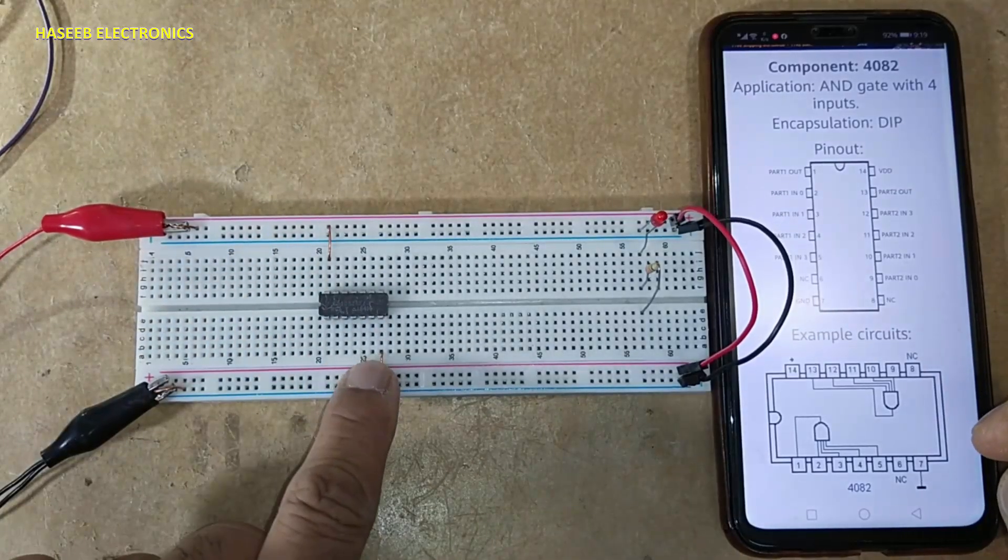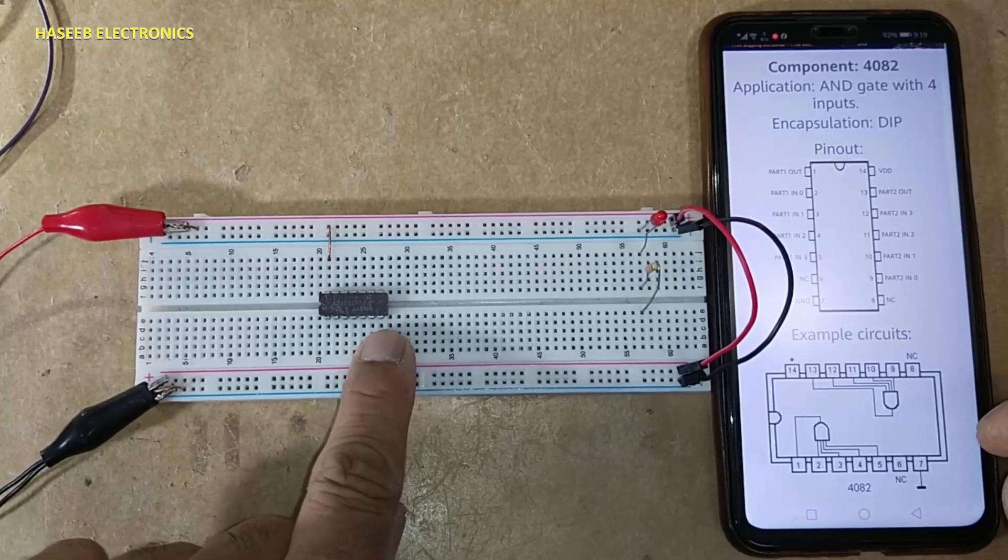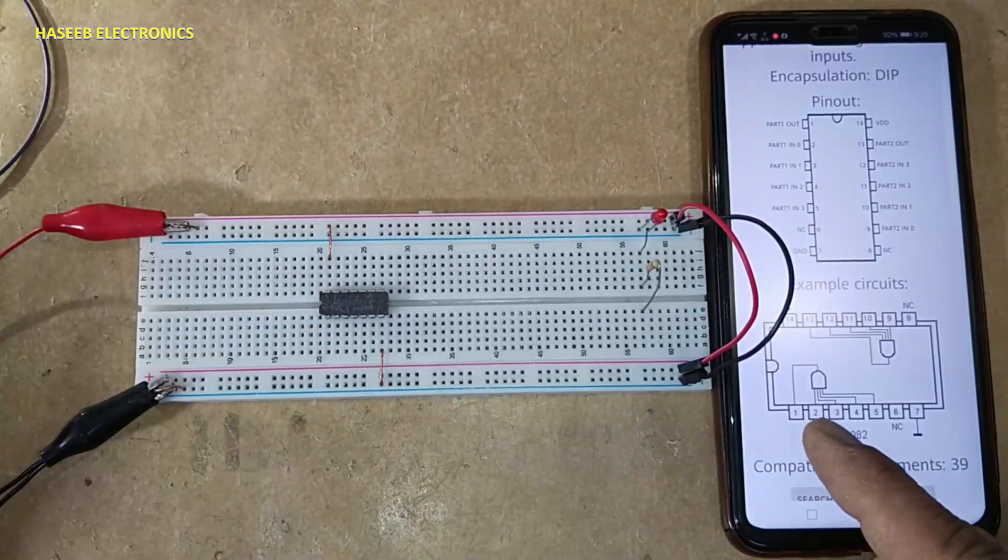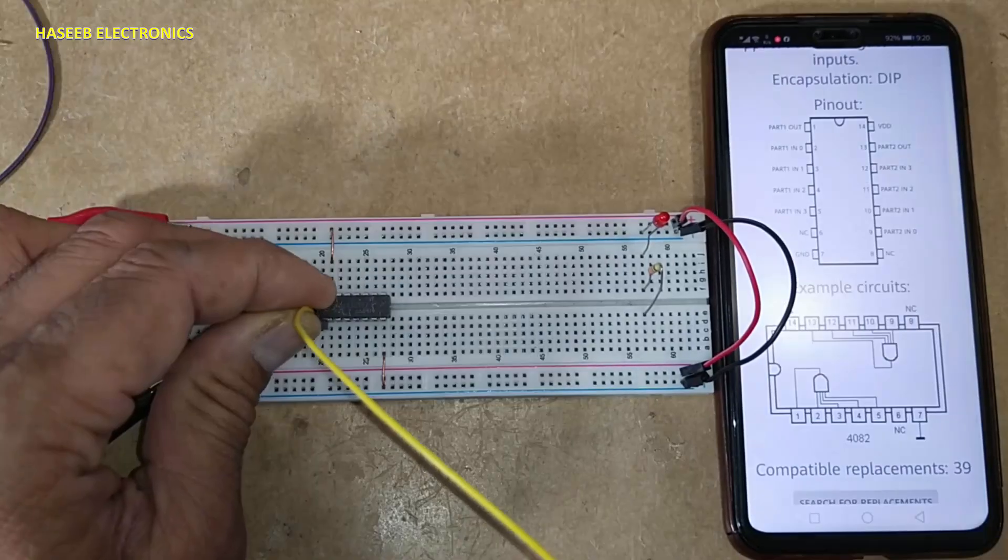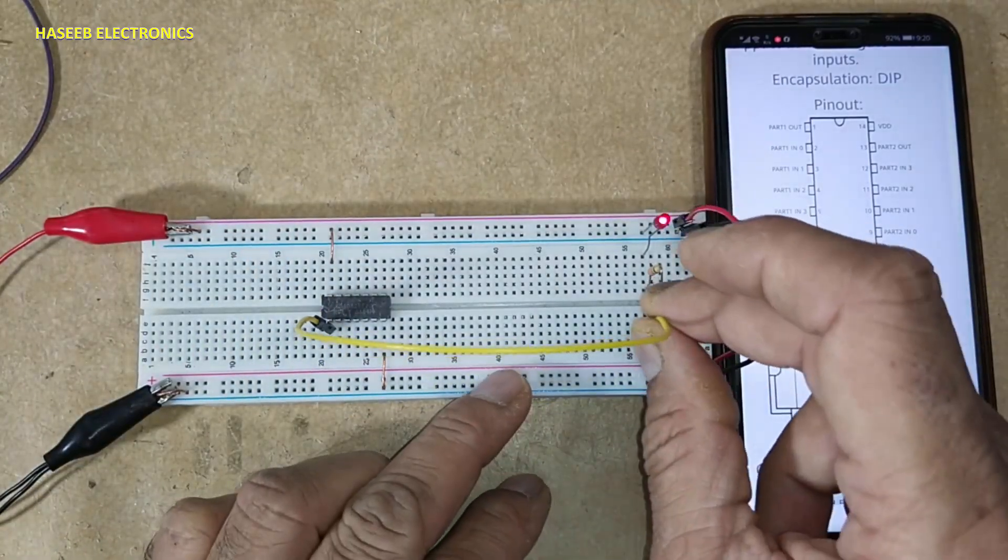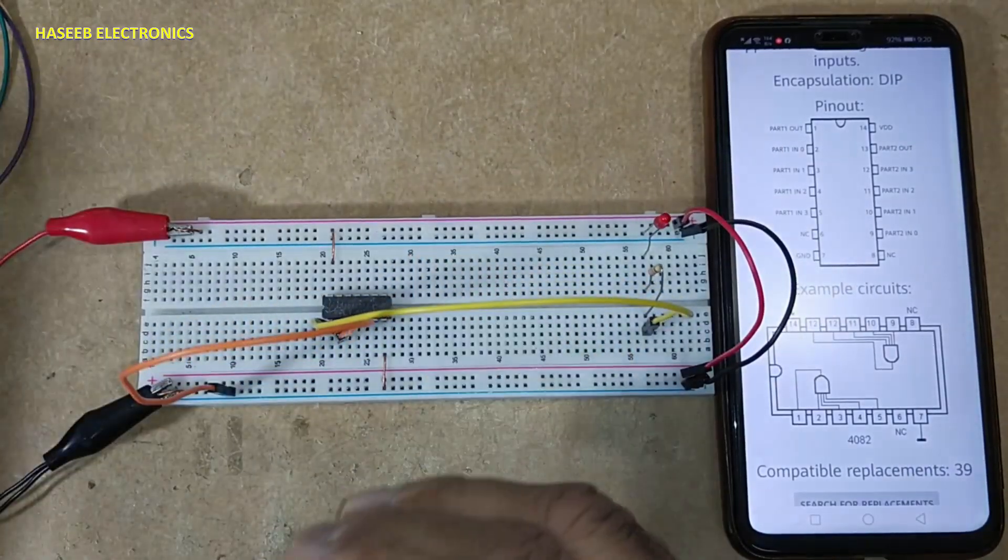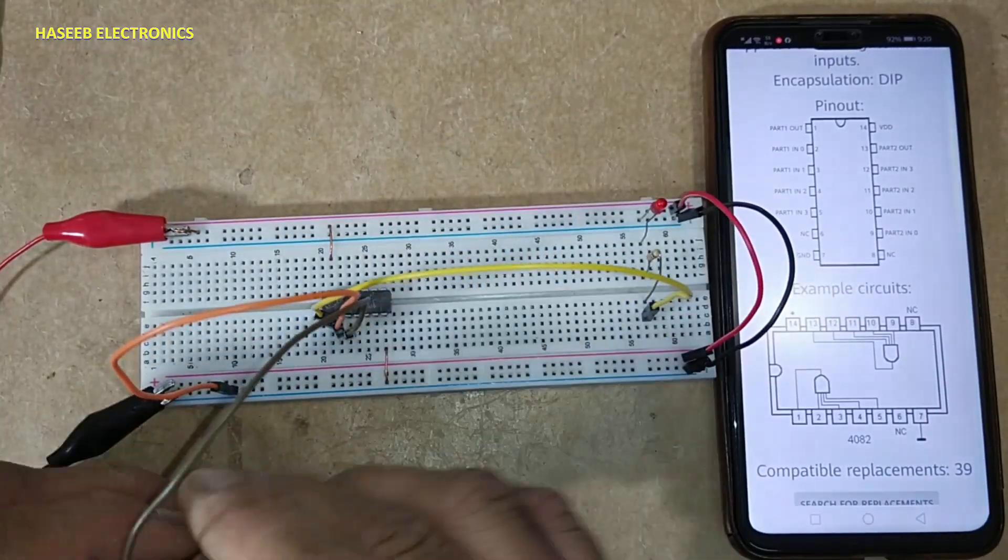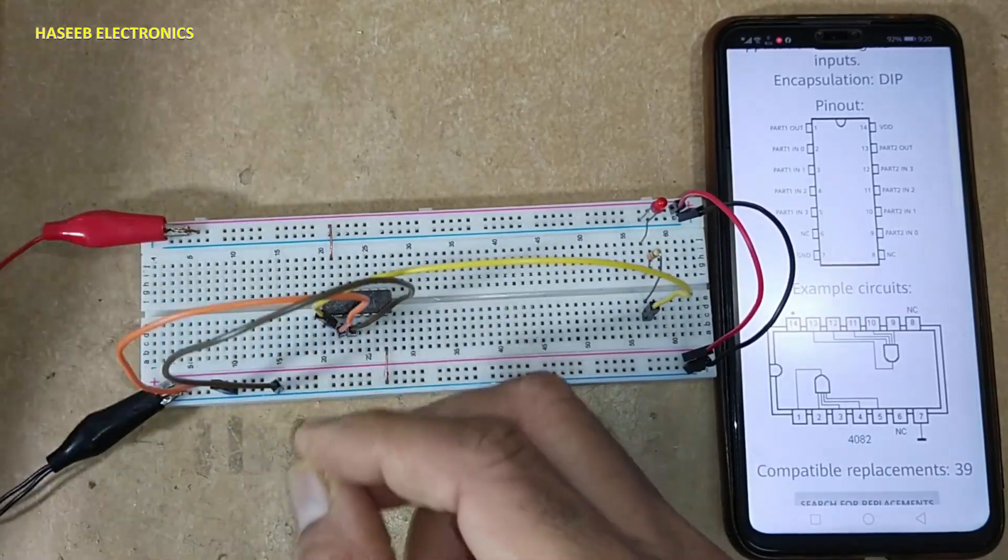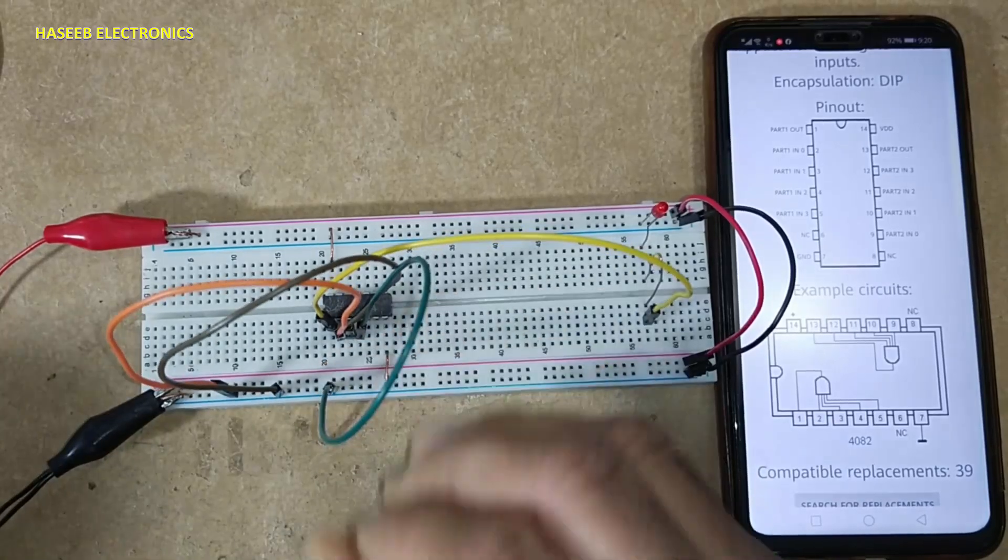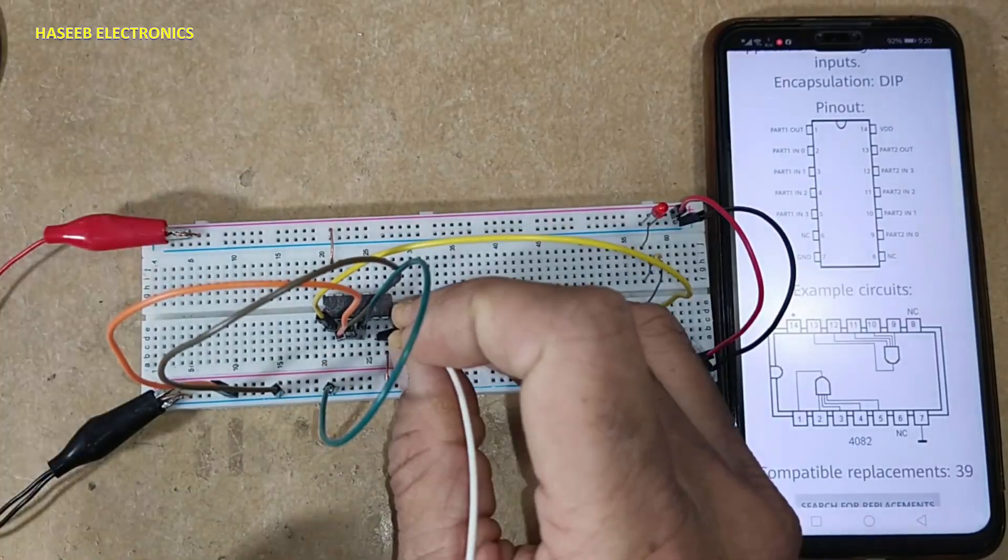First gate output from pin number one. First gate input I connected to low, pin number three second input low, pin number four third input low, pin number five fourth input low.